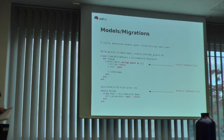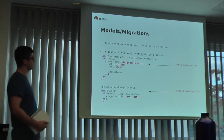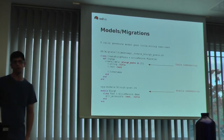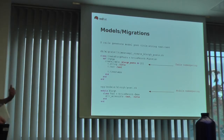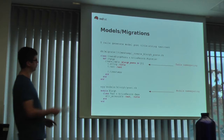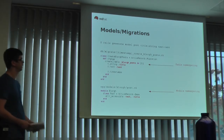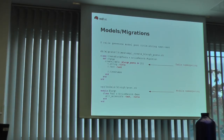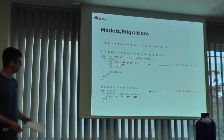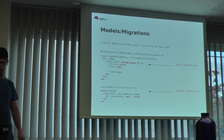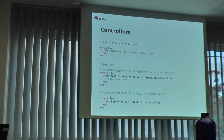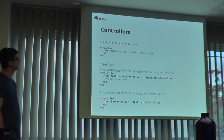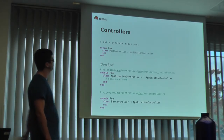Models and migrations are essentially exactly the same as they would be in any normal Rails application, except tables are prefixed with the namespace you specified in the engine definition, and classes are namespaced using the module. Note that the generator command should be 'Rails generate controller'.